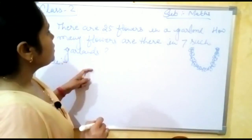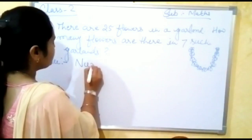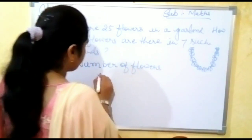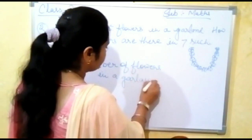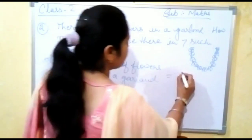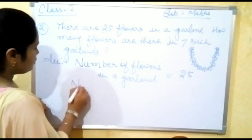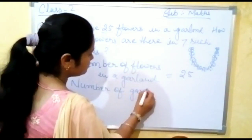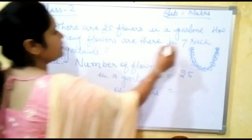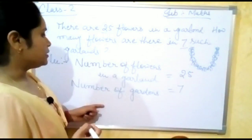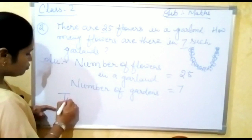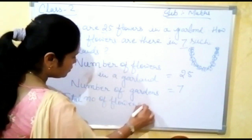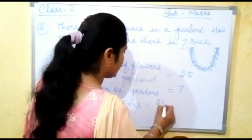What will be our first sentence? We will write: number of flowers in a garland equals 25. Then number of garlands equals 7. Now we have to find the total number of flowers. So we will write: total number of flowers. For this we will multiply 25 into 7.